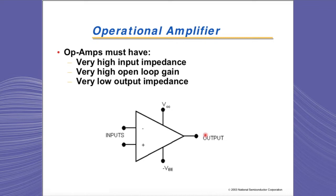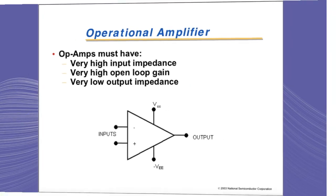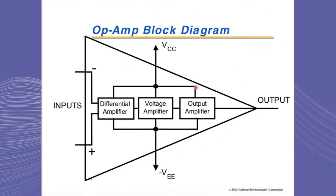Op-amps must have very high input impedance, very high open-loop gain, and very low output impedance. It's next to impossible to achieve all three in one single stage. This is why op-amps generally have three different stages: the first stage is a differential amplifier, the second stage is the gain stage, and the third stage is the output stage.